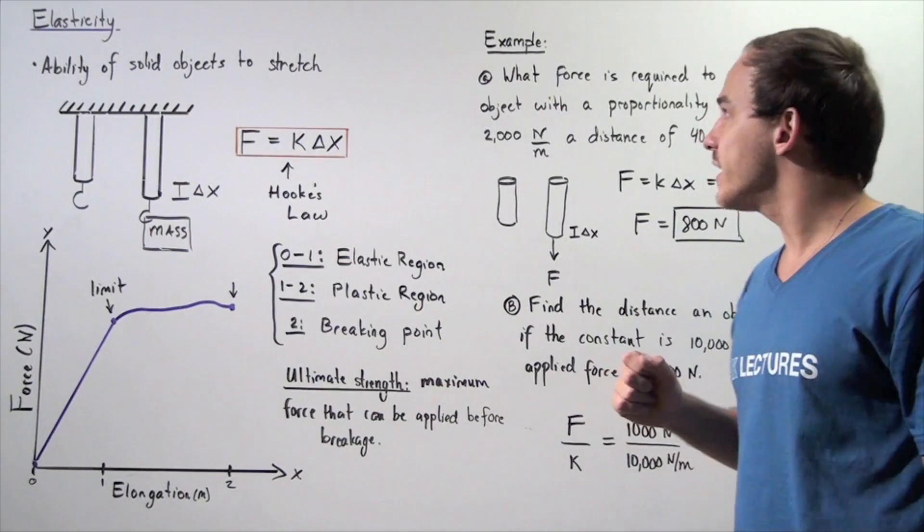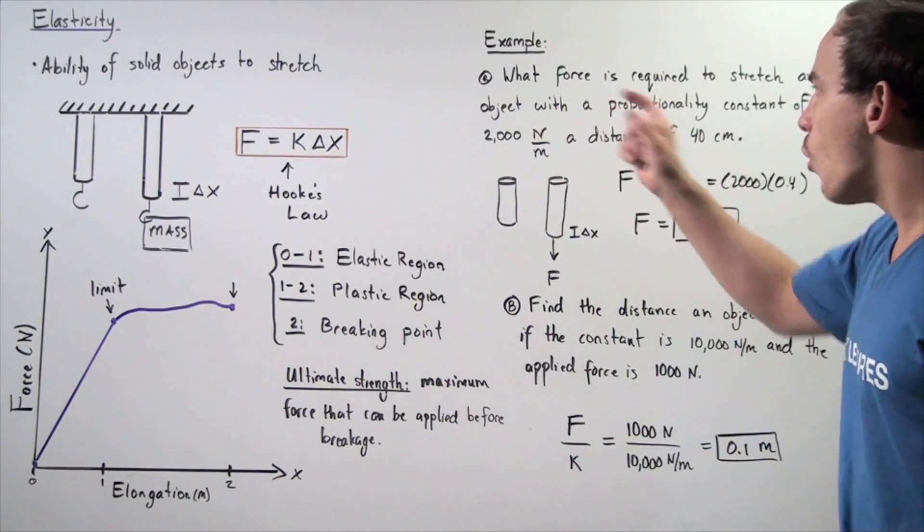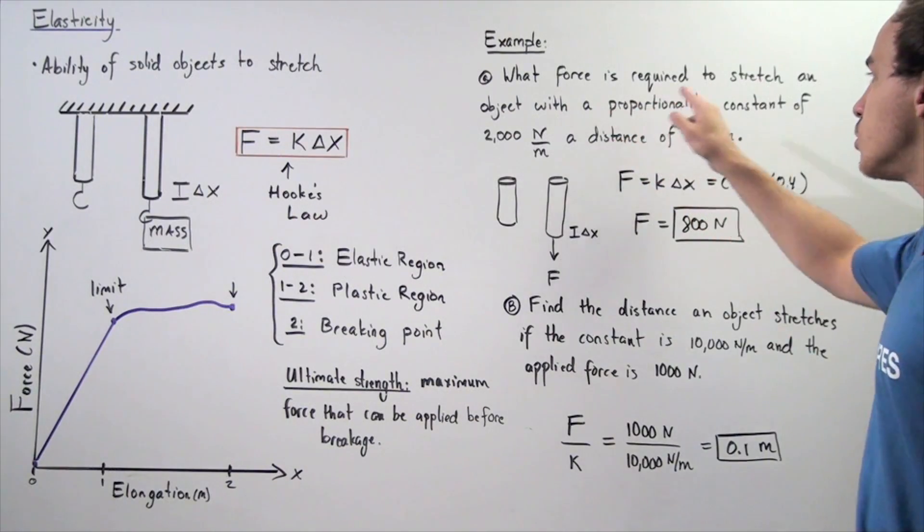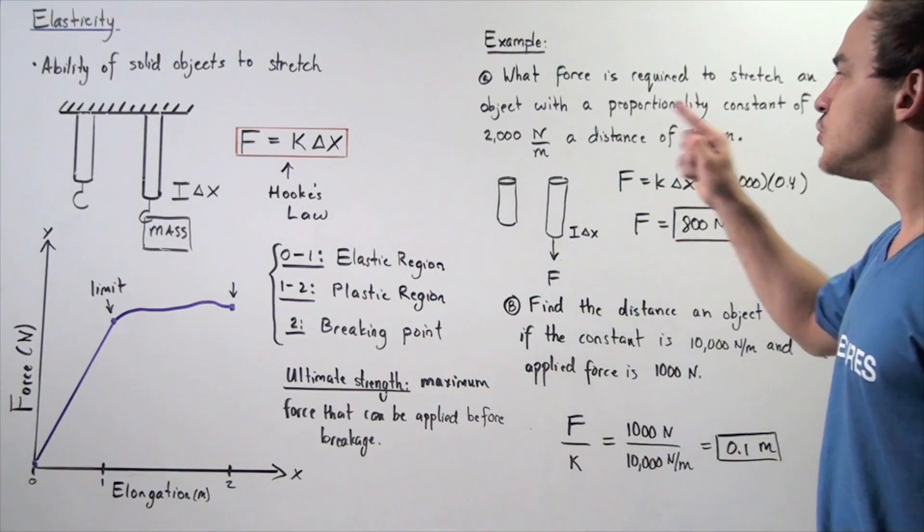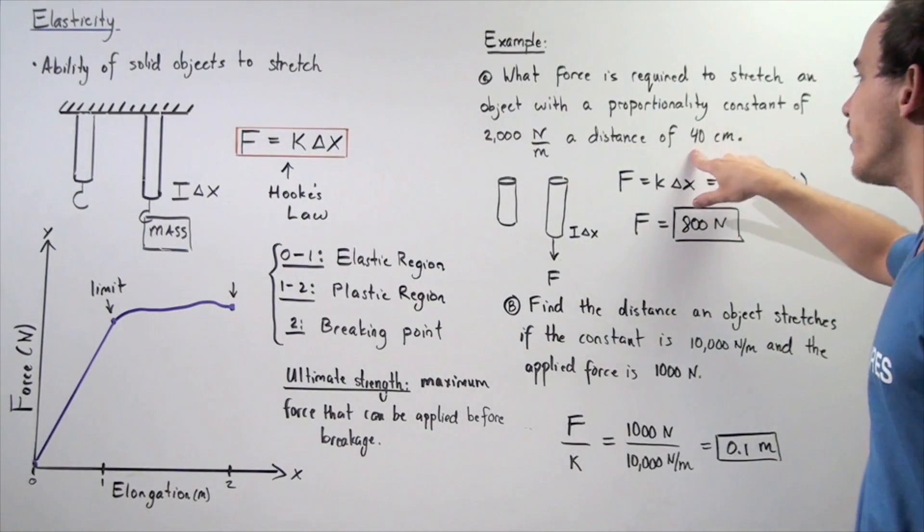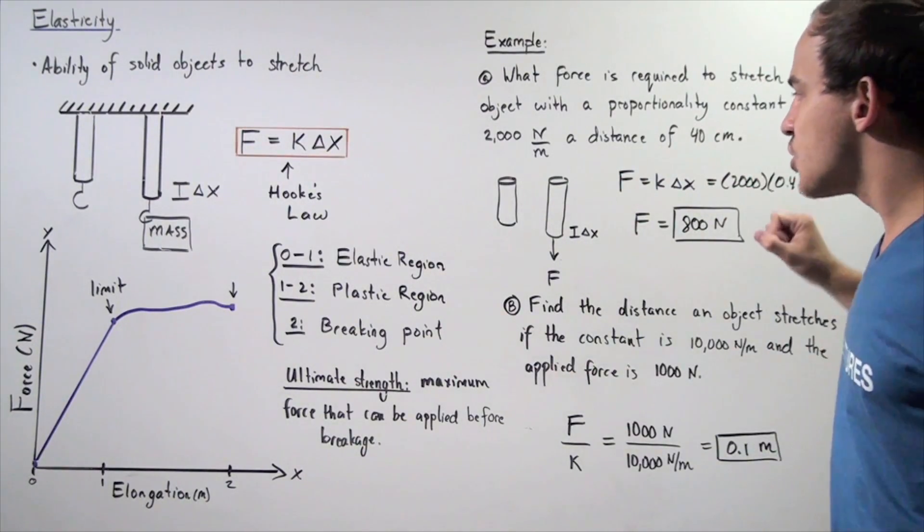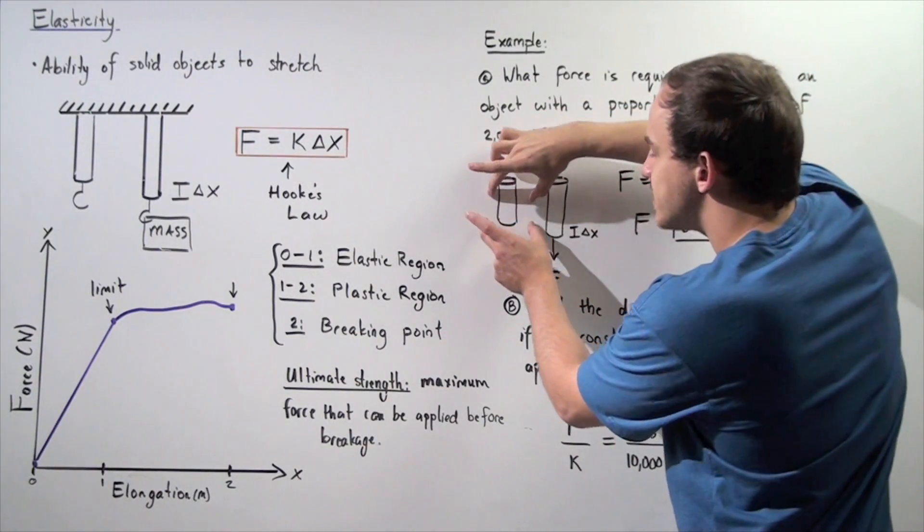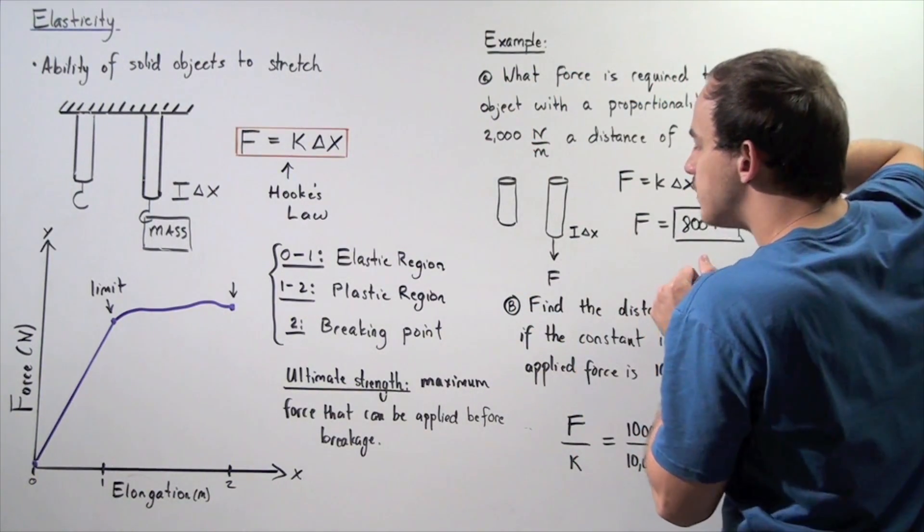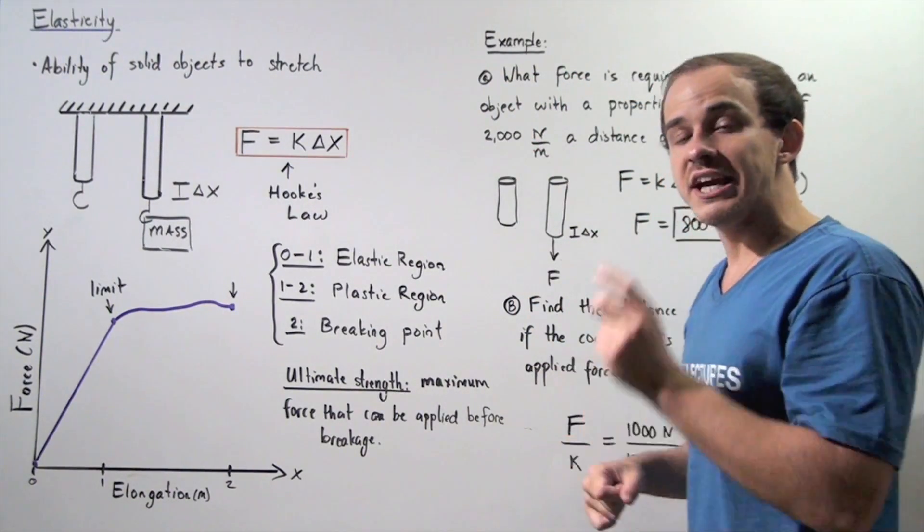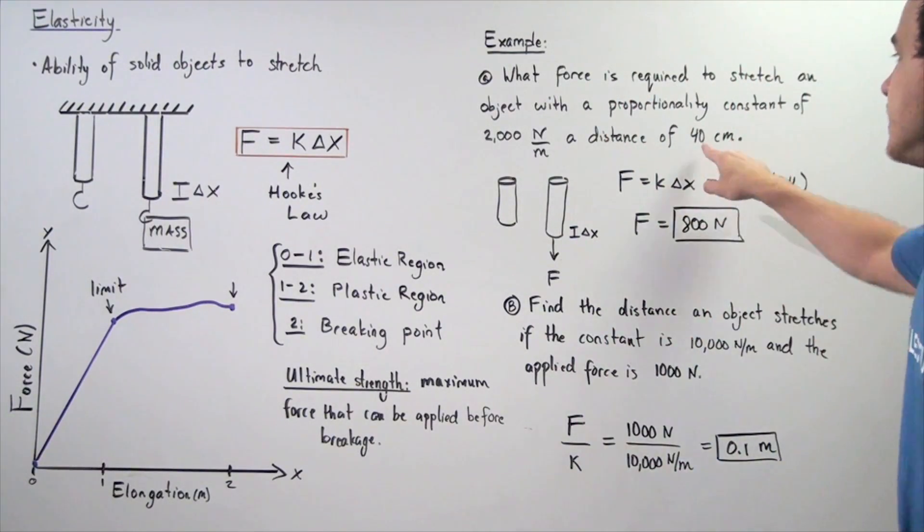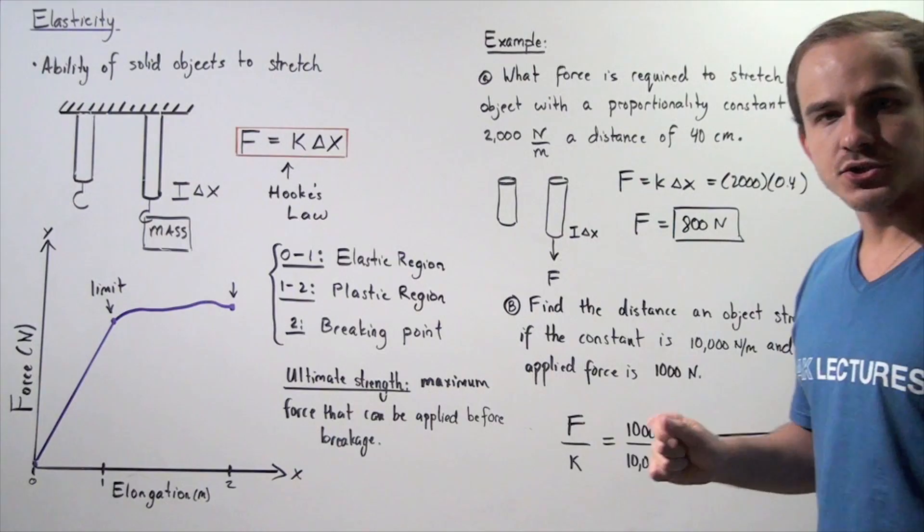So, let's suppose we have the following example. What force is required to stretch an object with a proportionality constant of 2,000 newtons per meter, a distance of 40 centimeters. So, let's suppose we have the following solid object, and we apply a force on the solid object.